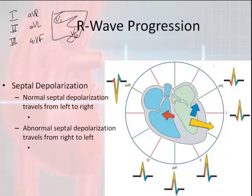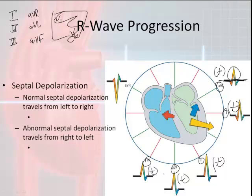The normal QRS complex — if you look at AVL, your R wave or QRS complex is primarily positive, meaning most of it is above baseline. Lead 1, 2, 3, AVF, and AVL should each have positively deflected QRS complexes. This is a normal R wave progression through the hexaxial leads. AVR, on the other hand, is always going to be negative in a normal hexaxial R wave progression. To summarize: leads 1, 2, 3, AVL, and AVF should have positive QRS deflections; AVR should be negative.